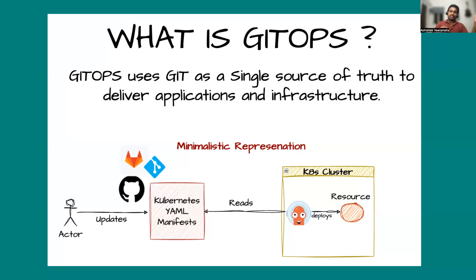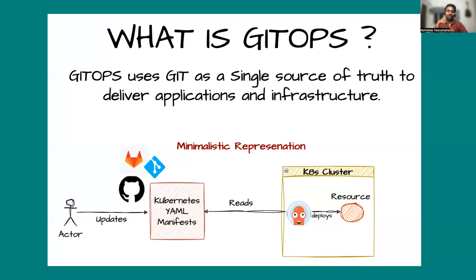In this example, let's say there is person X who has updated the node configuration. After 10 days, if someone asks you what change was made on the Kubernetes cluster, how do you answer? There is no mechanism for tracking the change. There is no versioning for your Kubernetes cluster, no auditing — you don't actually know who is making the change.